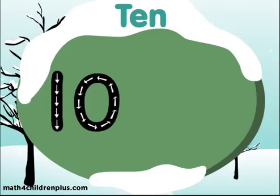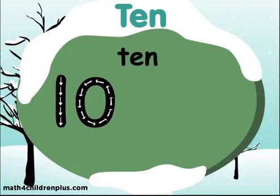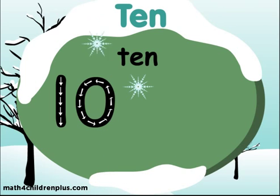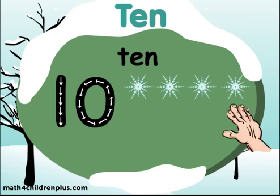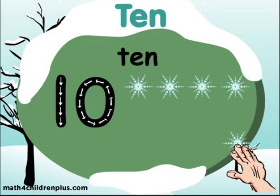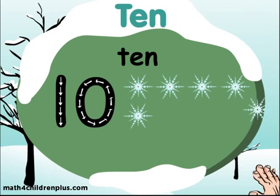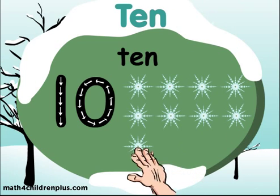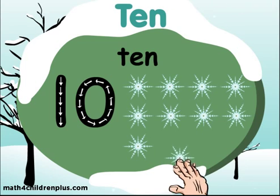Great! As each flake falls, we'll count it together until we get to 10. 1 cold snowflake, 2, 3 cold snowflakes, 4 chilly, 5 freezing snowflakes, 6 snowflakes, 7 cold snowflakes, 8 freezing snowflakes, 9 snowflakes, and 10 — 10 snowflakes. There!